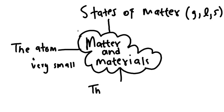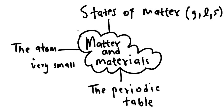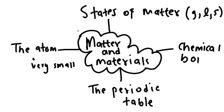We cannot talk about atoms without first talking about the periodic table. The periodic table consists of elements, and atoms are part of an element. During the second term, we will learn about the different elements — from metals, non-metals, gases, and more. Atoms can also combine to form other types of materials; when this happens, we refer to it as chemical bonding. We will learn about chemical bonding during the second term. So under matter and materials, we have: states of matter, the atom, the periodic table, and chemical bonds.